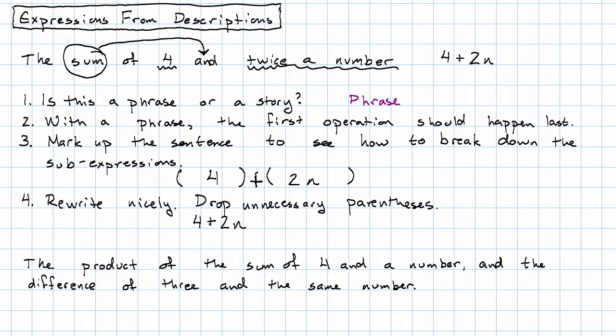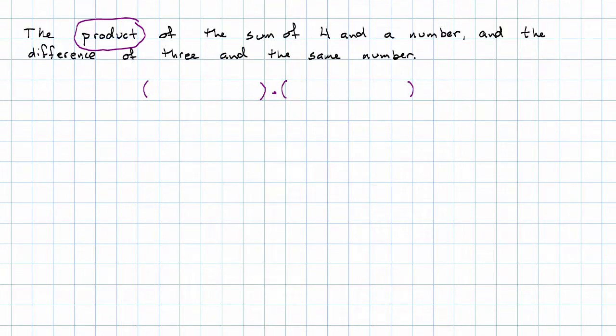So this says, the product of the sum of four and a number and the difference of three and a number. So this is kind of hard to read, right? The first word is the product. So we know we're going to have to multiply. Multiply what? But maybe I can't figure out which and goes with the word product yet.